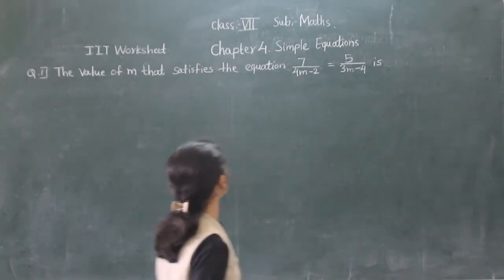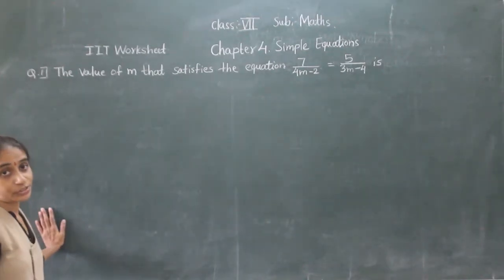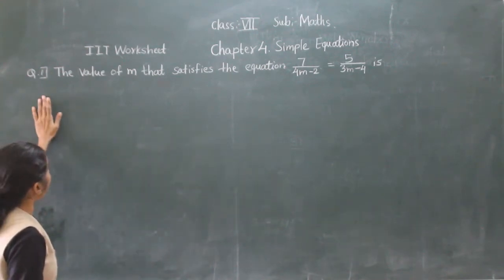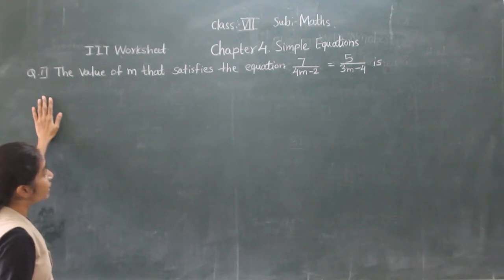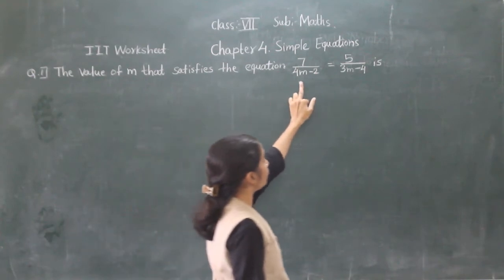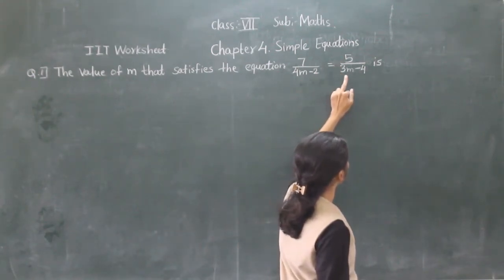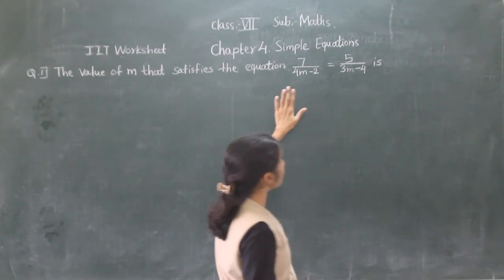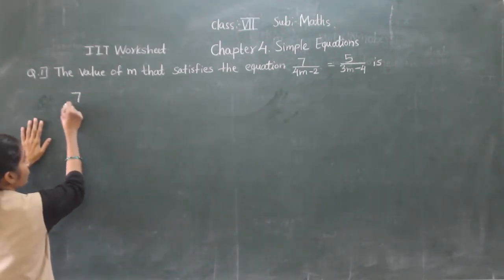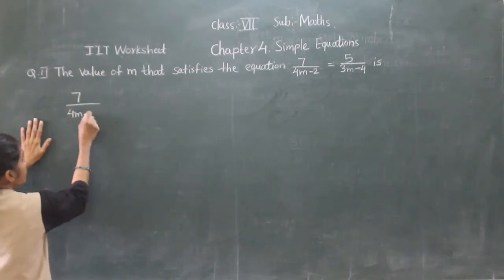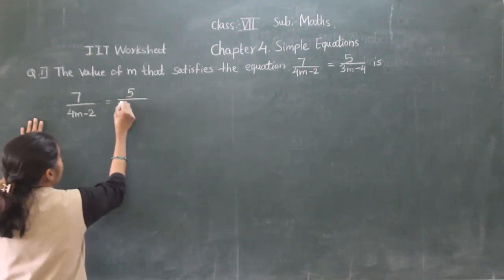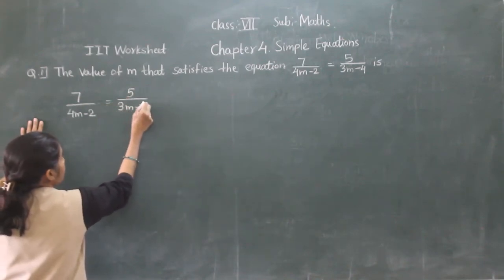Hello everyone, let's start the worksheet. Question number 1: find the value of n that satisfies the equation 7 upon 4n minus 2 is equal to 5 upon 3n minus 4. We have to solve this given equation: 7 upon 4n minus 2 is equal to 5 upon 3n minus 4.